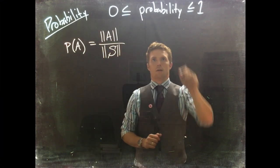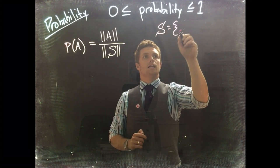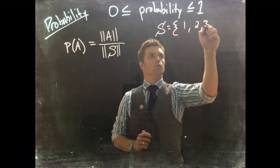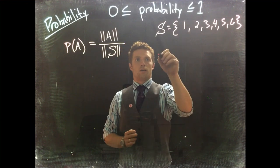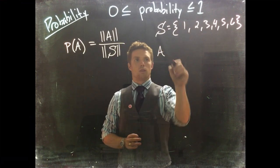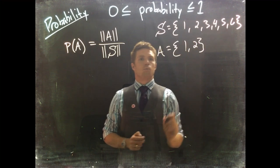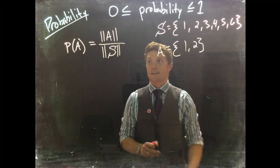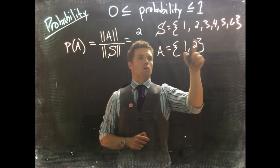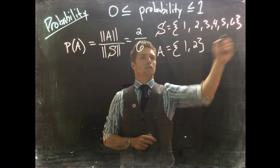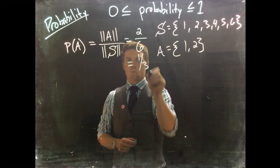Remember our sample space: we can roll a dice, which gives us 1, 2, 3, 4, 5, 6. If our event is rolling 2 or less, that would be 1 and 2. The probability for event A would be two outcomes in A divided by six outcomes in the sample space, giving us 2/6 or 1/3.